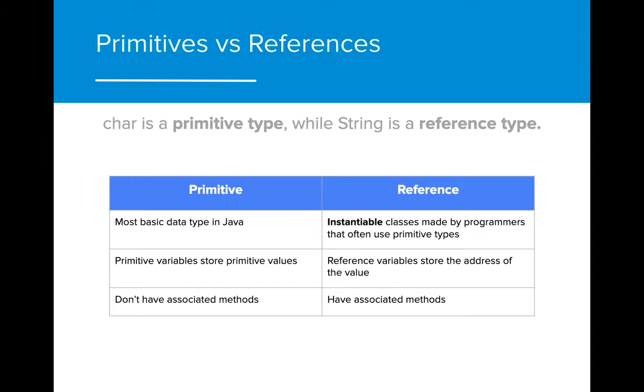To recap, there are several big differences between those types. Primitive types are considered the building blocks of programming languages, while reference types are types that have been created by programmers using those primitive types. String, for example, is a variable type that was created using char variable types, and has its own functionality that has been created by programmers.